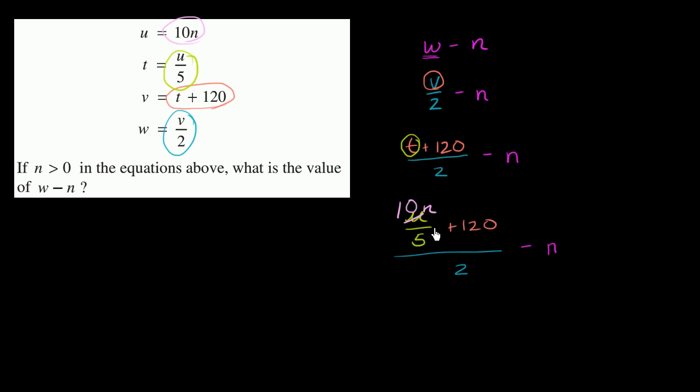So this whole term, let me do this in a new color. So 10n divided by 5 divided by 2, I'm just going to divide. So I'm going to divide 10n divided by 5 divided by 2. That's going to be 10n divided by 10.